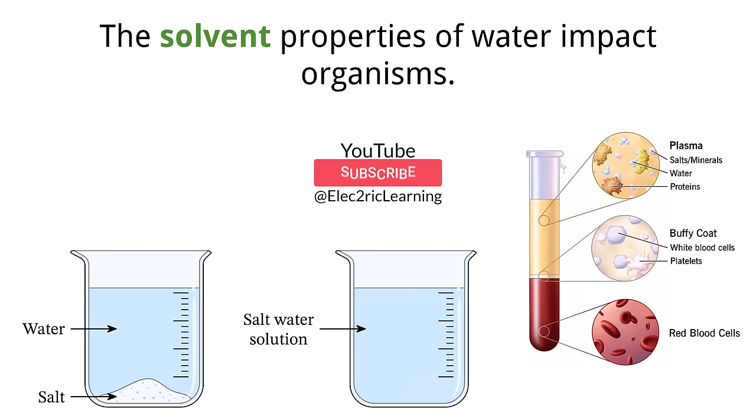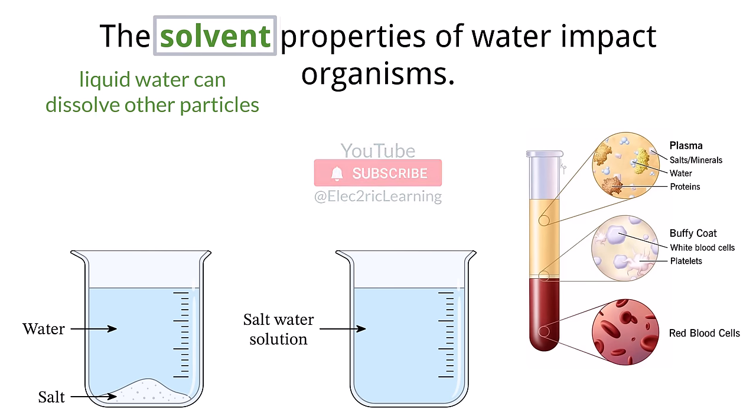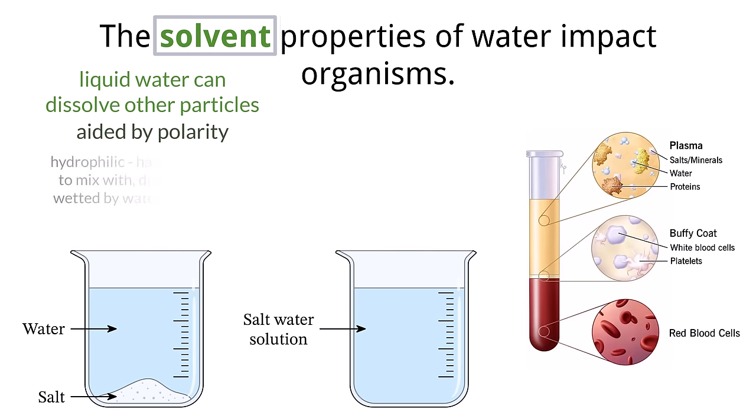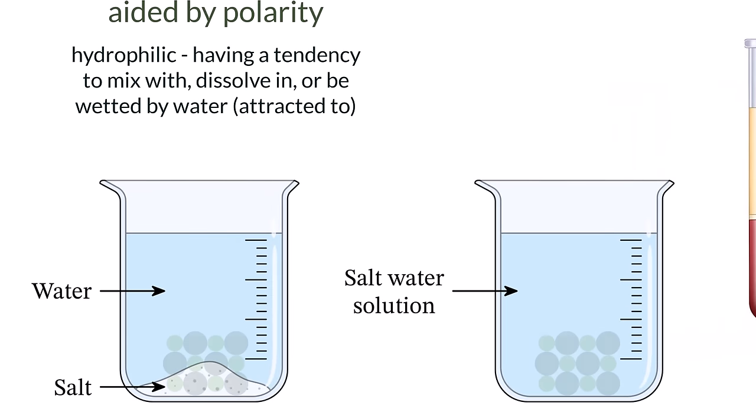Water has the ability to dissolve particles within it in a liquid state. We call this the solvent property. This works, just like all the other properties, due to the fact that water is polar and creates hydrogen bonds. Substances that are attracted to the polar charges of the water molecules are called hydrophilic. Take a salt crystal for example. When you shake some salt into a cup of water and swirl it around you will notice that it disappears. This isn't a magic trick, and the atoms that were in the salt cube are not actually gone, they were just separated by the water and spread out evenly into tiny pieces that are too small to see with the naked eye.